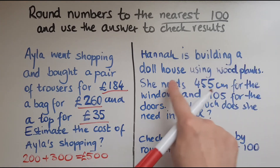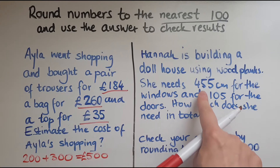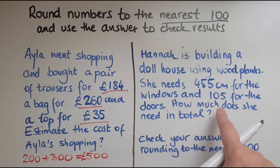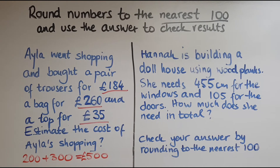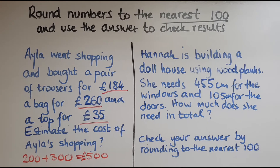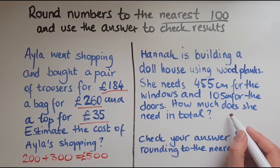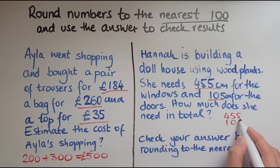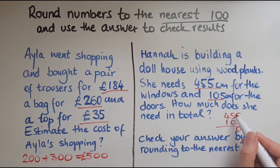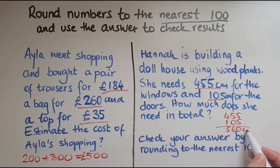Hannah is building a dollhouse using wood planks. She needs 455 centimeters for the windows and 105 centimeters for the doors. How much does she need in total? We haven't been asked to estimate, so we need to work out the total exactly. The easiest way is to add 455 and 105 using the column method: 5 and 5 makes 10, write zero and carry one; 5 and 1 makes 6; and 4 and 1 makes 5. So the answer is 560 centimeters.